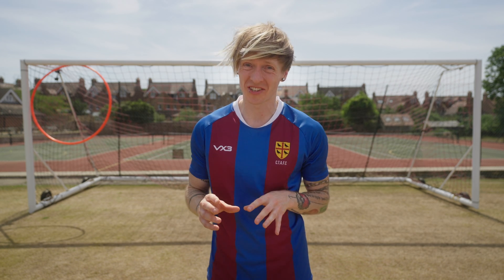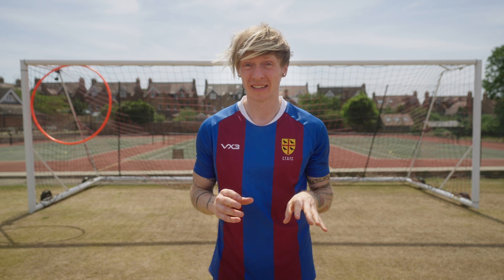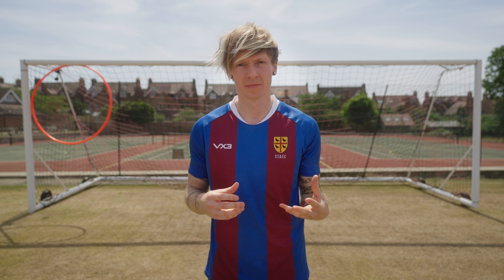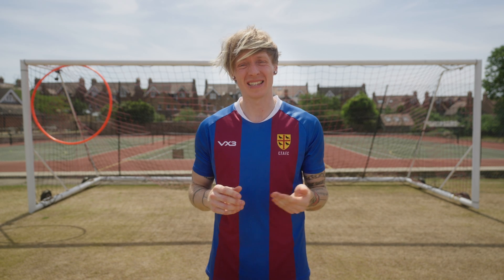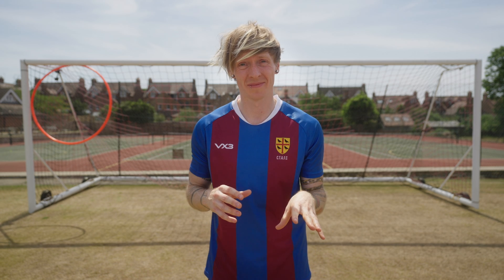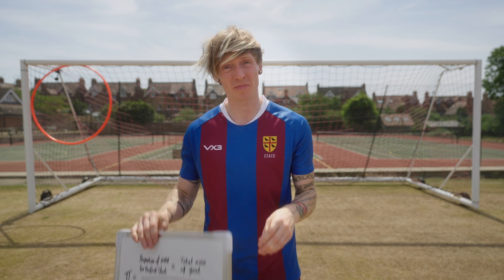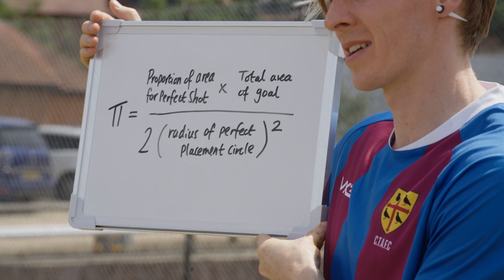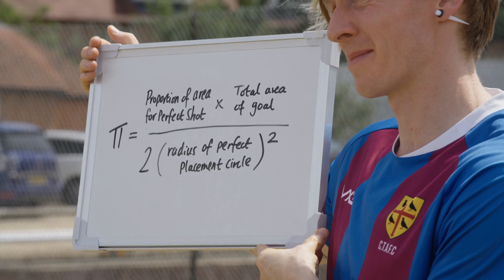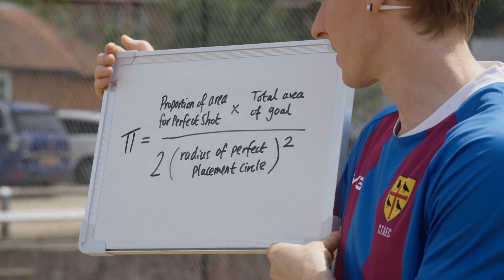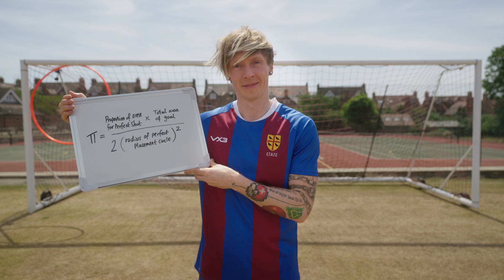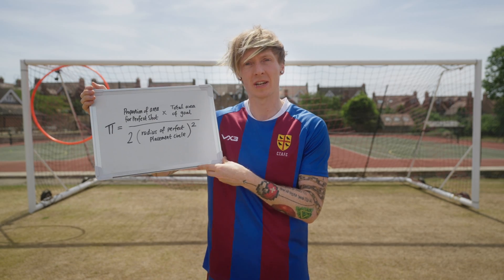Now we've seen me eventually hit the perfect penalty. You may be wondering what all of this has to do with pi. The area I was aiming for was of course a circle, and the area of a circle equals pi multiplied by the radius squared. Rearranging gives us our first alternative definition: pi equals the proportion of area for a perfect shot multiplied by the total area of the goal, divided by twice the radius of the perfect placement circle squared.